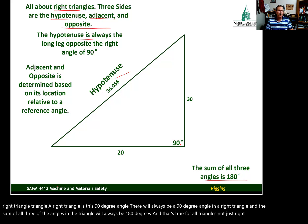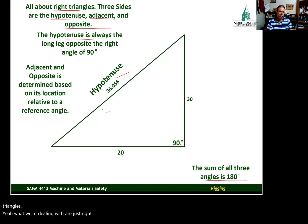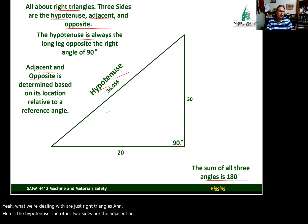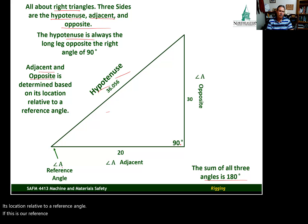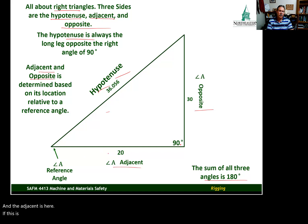What we're dealing with are just right triangles. The other two sides are the adjacent and the opposite, and these are determined based on location relative to a reference angle. If this is our reference angle — let's call it angle A — the opposite is on one side and the adjacent is on the other. If this is our reference angle, this side is the adjacent and this side is the opposite.